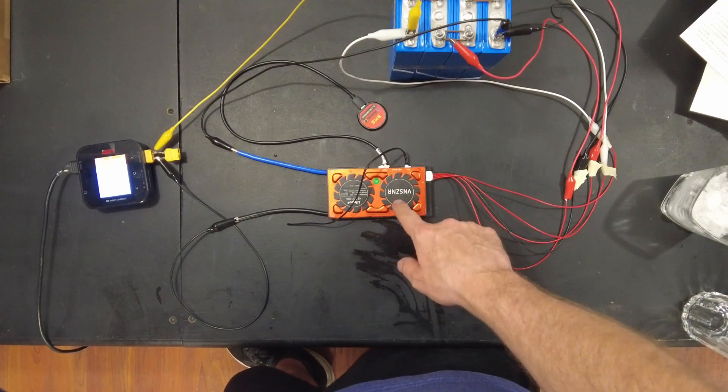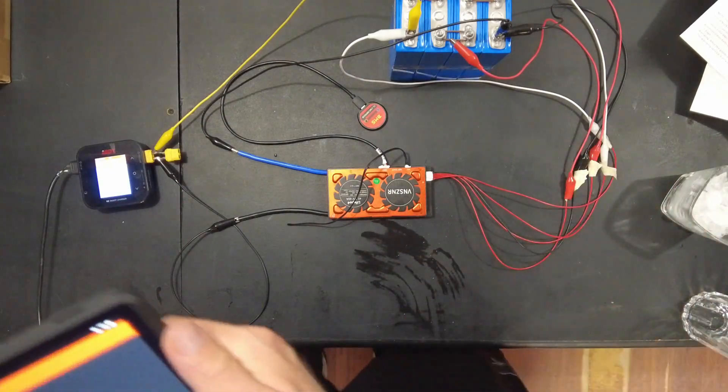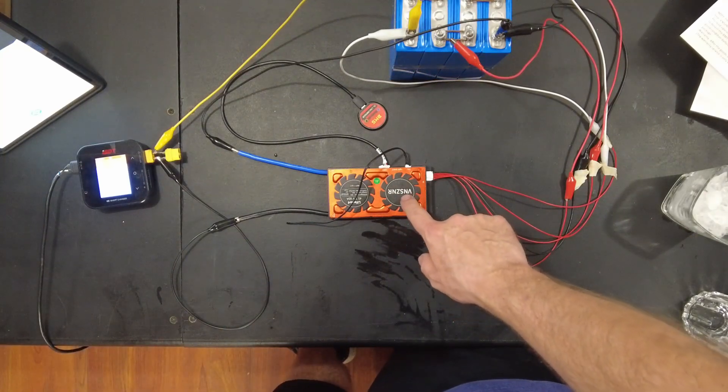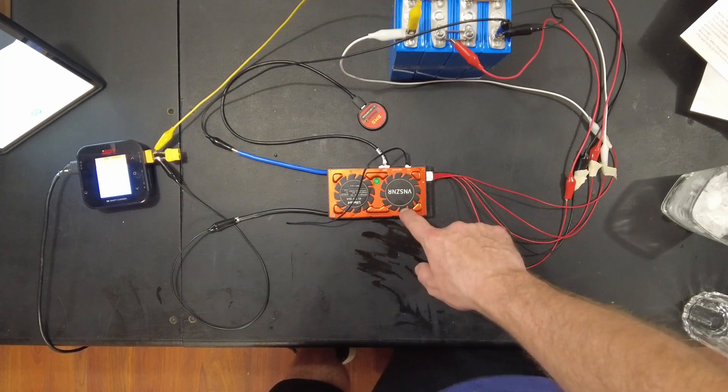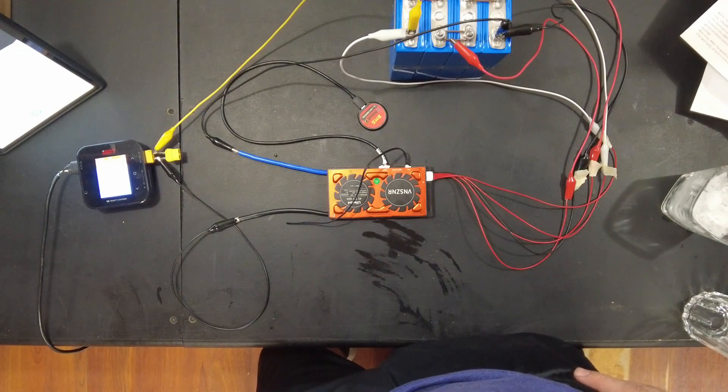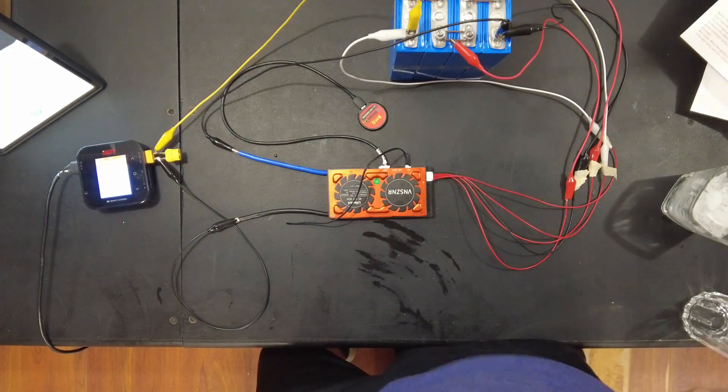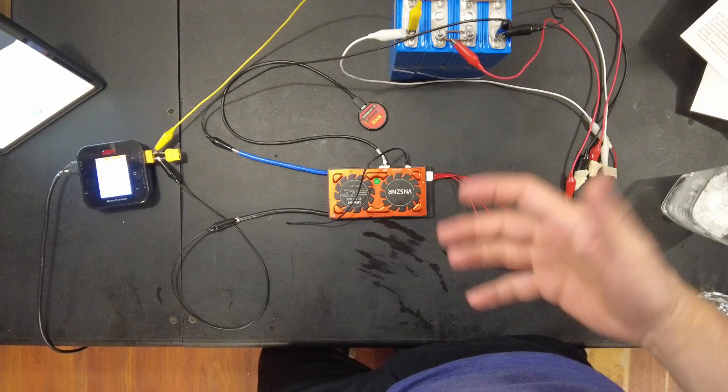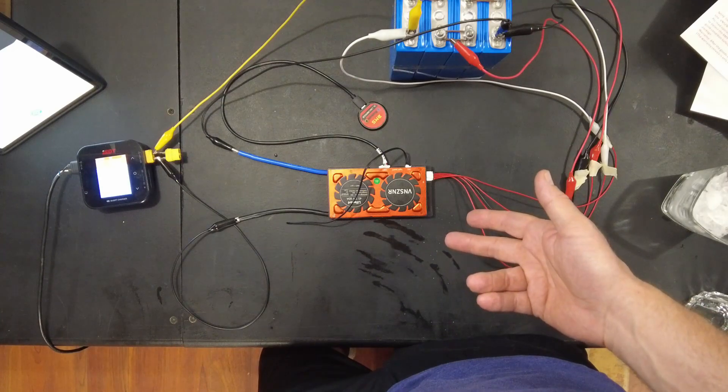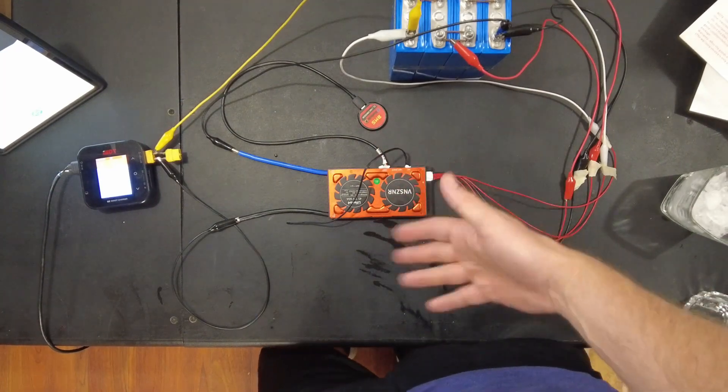So anyways, this is a 60 amp 4S. I think it was like 60 something dollars on Amazon. And the nice thing about this knockoff VNSZNR brand, which I'm pretty sure is exactly a Daly BMS, I got it like next day or something. If you're buying Daly BMSs, it's sometimes hard to get them in a reasonable amount of time.